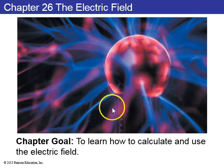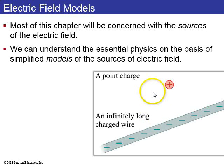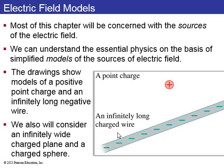We're now moving into chapter 26, all about the electric field. Most of this chapter will be concerned with the sources of the electric field. We can understand the essential physics on the basis of simplified models of the sources of electric field. So, for example, a point charge. Any little small collection of charges that is much smaller than other objects around can be modeled as a point charge. Here's an infinitely long charged wire. Again, any line-like or narrow long collection of charges that is much thinner than other aspects of the problem and much longer can be modeled as an infinitely long charged wire. We're also going to consider infinitely wide charged plane and a charged sphere. We'll do most of that tomorrow.